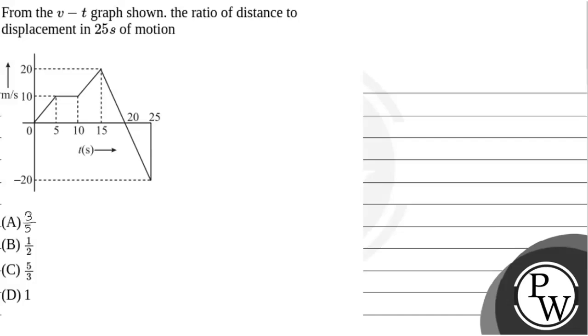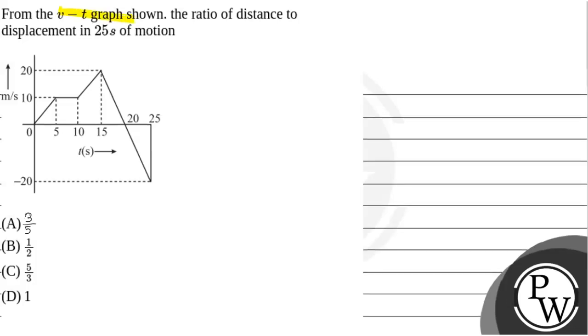Hello, let's read the question. This question asks: from the v-t graph shown, find the ratio of distance to displacement in 25 seconds of motion. This one, right? So in 25 seconds of motion we need to find the ratio of distance to displacement.